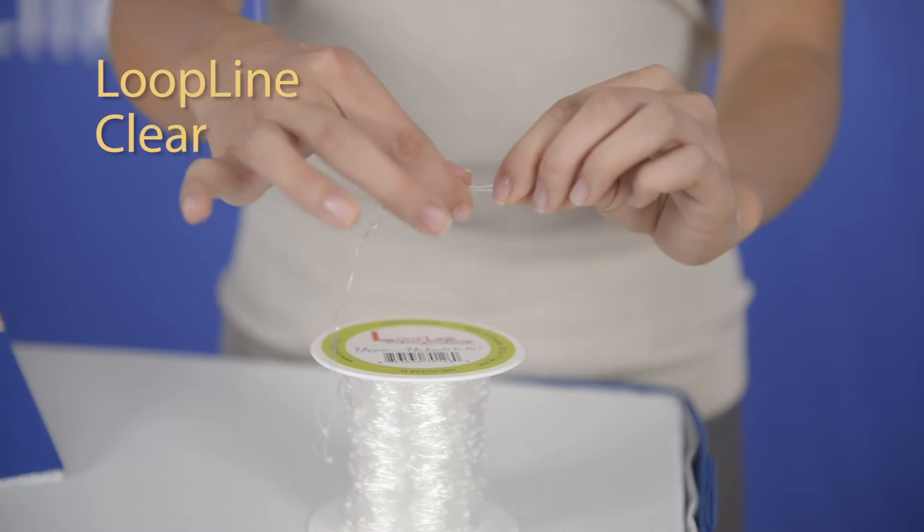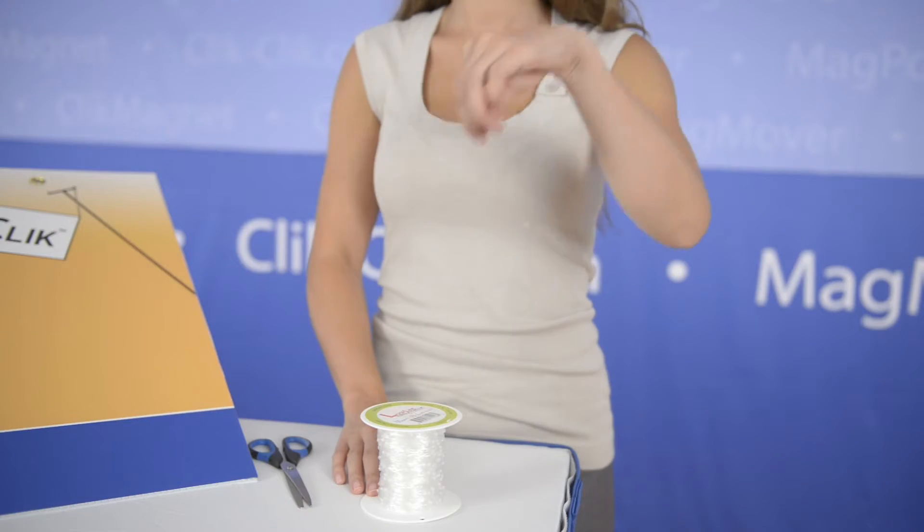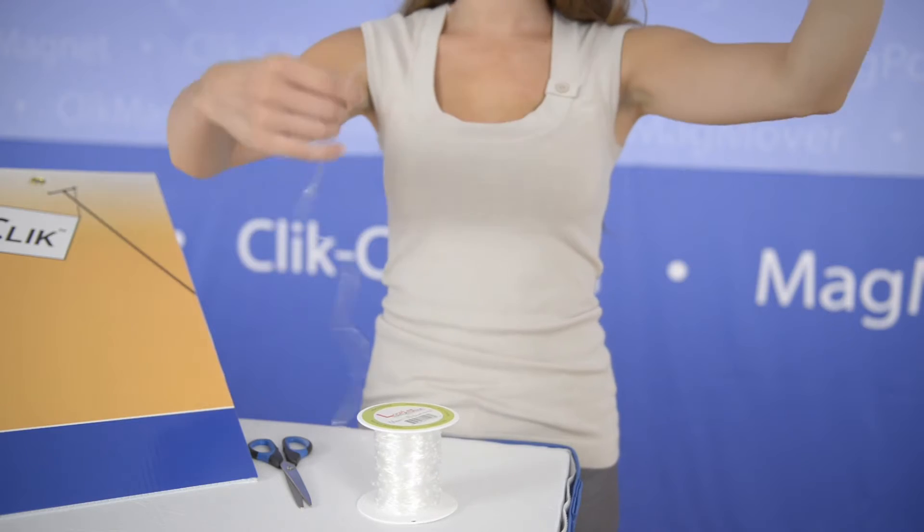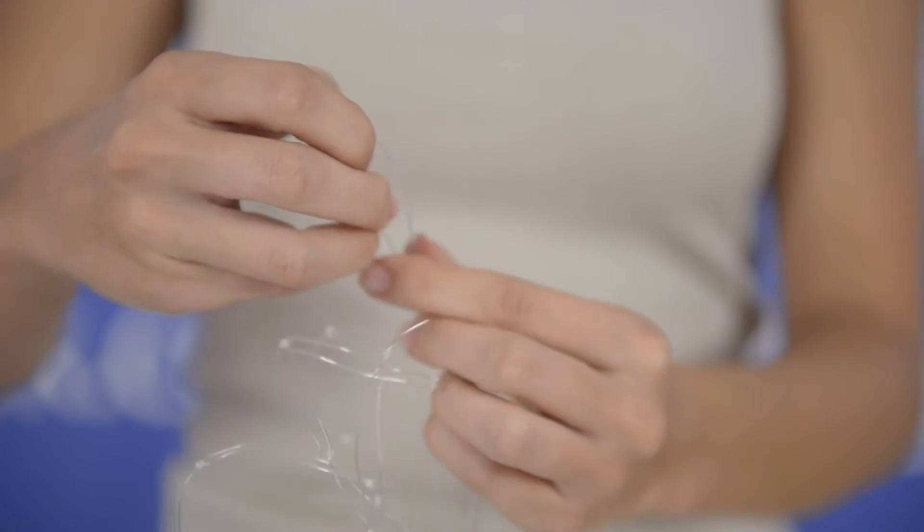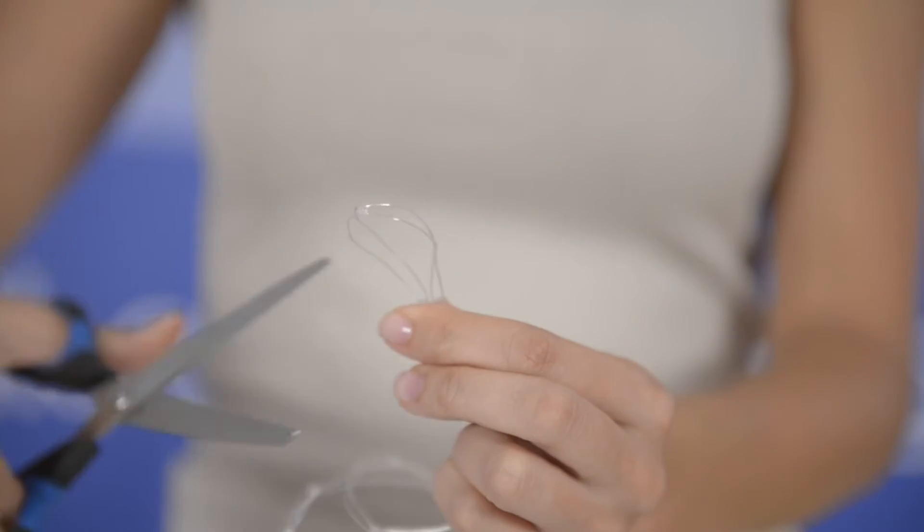First, prepare two identical lengths of loop line. Made of continuous 2-inch loops, just count an equal number of loops for each line, or fold and trim as shown.